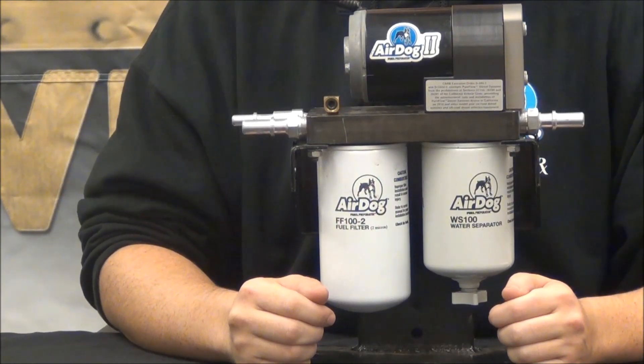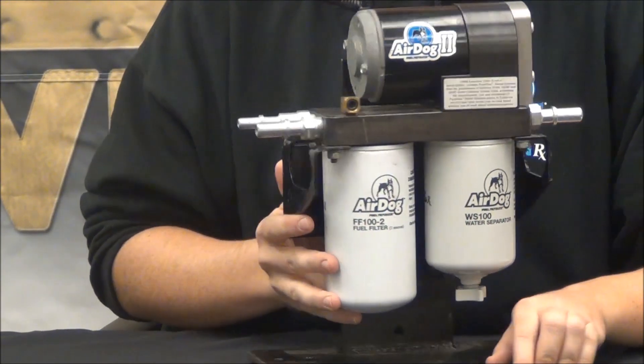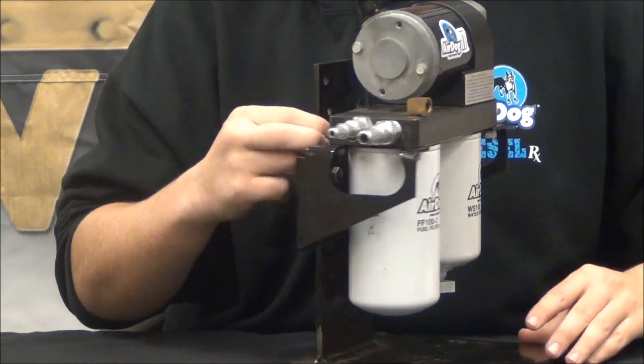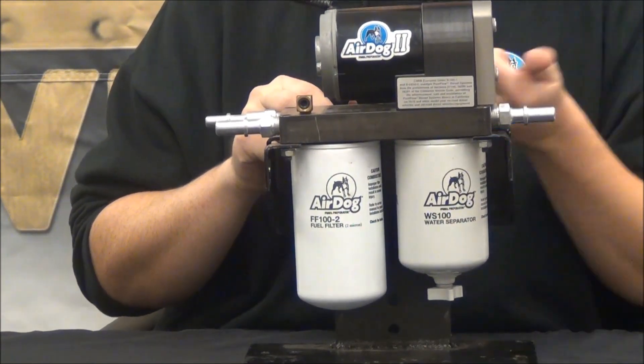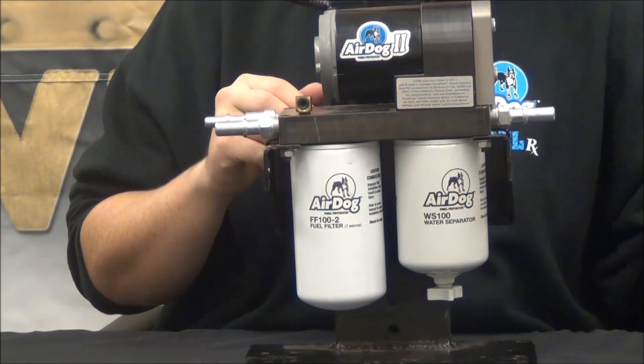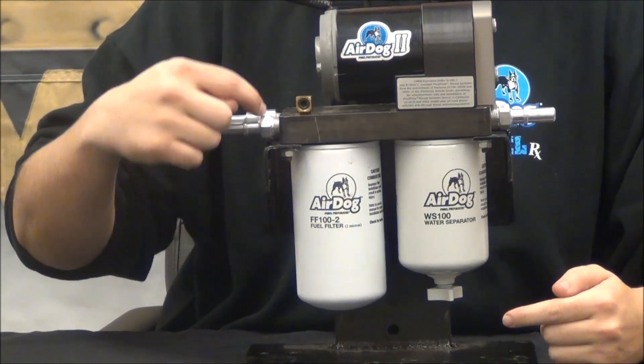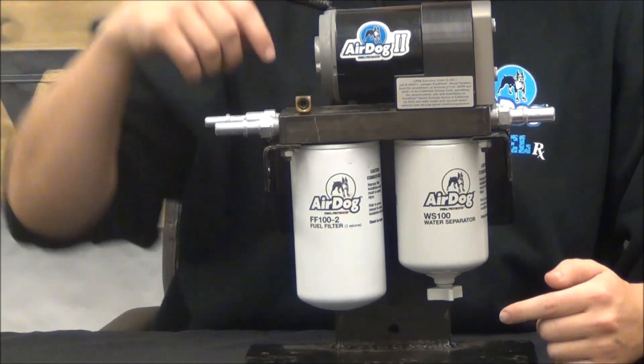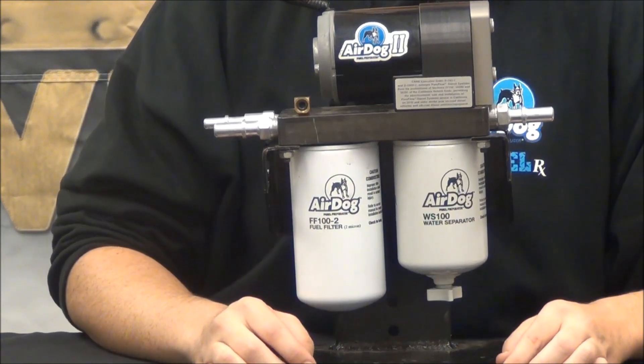The demand flow allows the AirDog to not have a high flow return. When the engine demands less fuel, say at idle, the regulator plunger opens and allows the pressurized fuel from the fuel filter to flow through the suction side of the gear rotor. This allows the fuel to recirculate through the pump and be filtered over and over again when the engine does not need it.